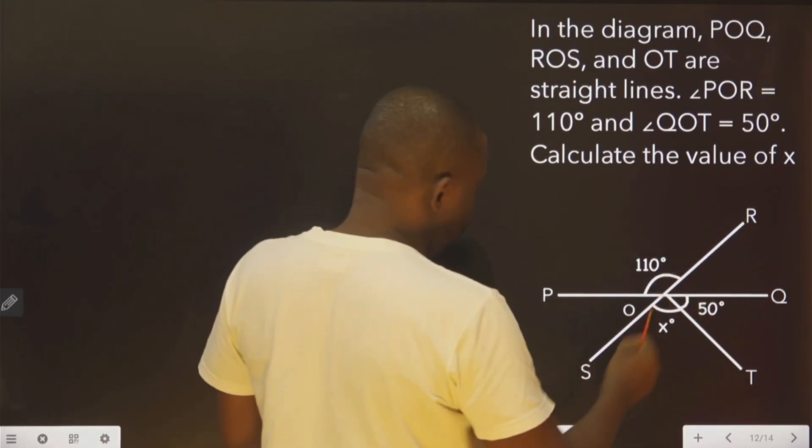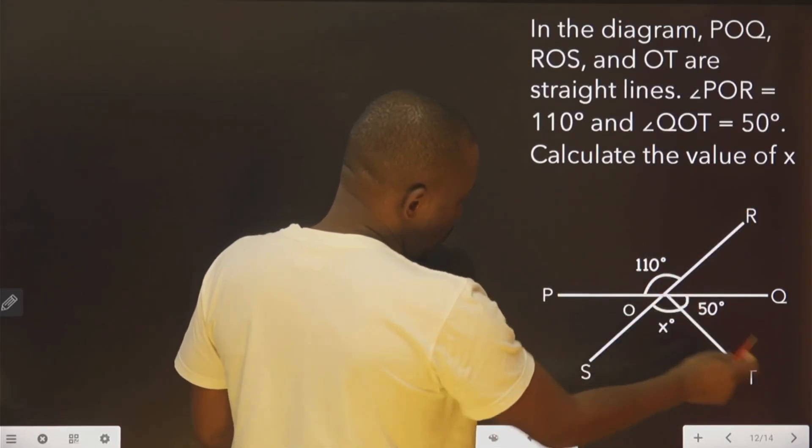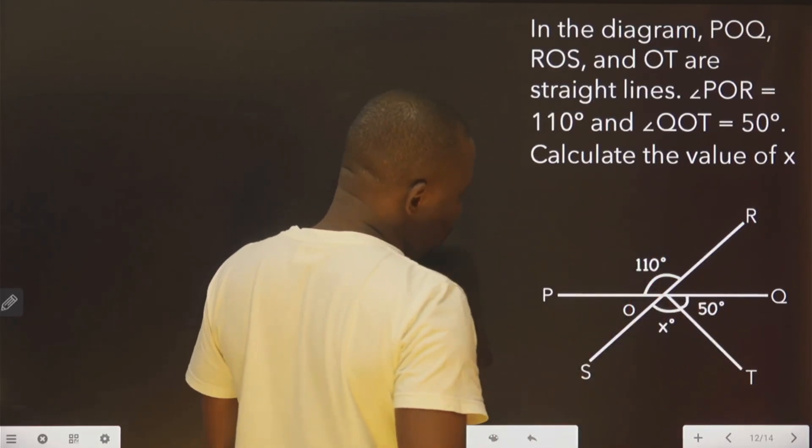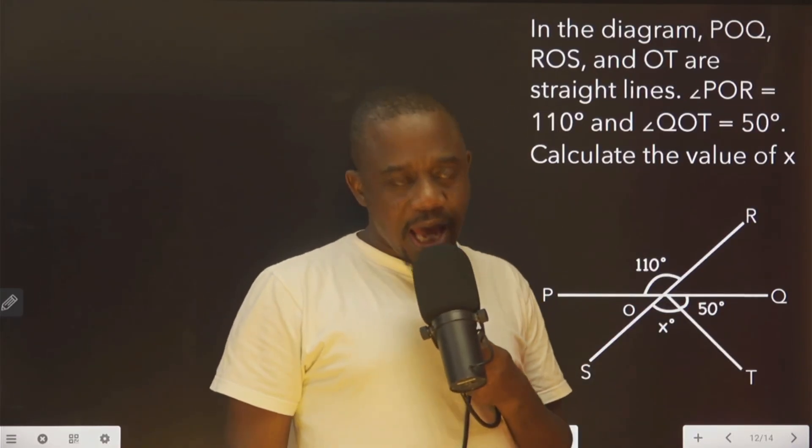That is, POQ, ROS, and OT are straight lines. This angle is 110, this angle is 50. We should calculate for X.